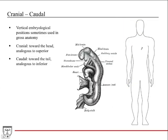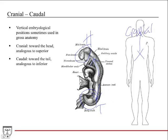Another way to describe vertical positions is two embryological terms: cranial and caudal. In a developing embryo, you have the head and the tail. Caudal means structures towards the tail; cranial means structures towards the head. In an adult figure, cranial is towards the head and caudal is down towards the inferior portion of the body. Cranial is analogous to superior, and caudal is analogous to inferior.